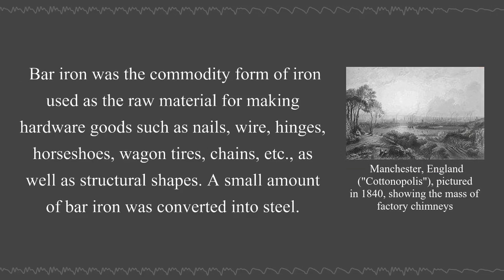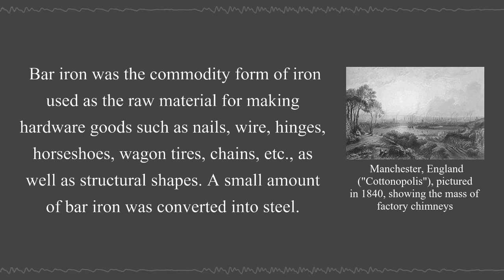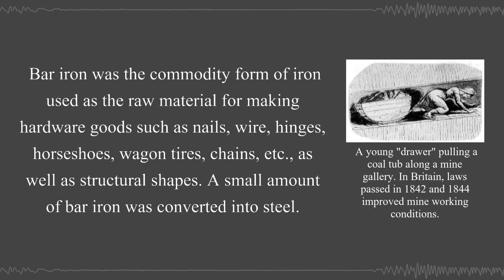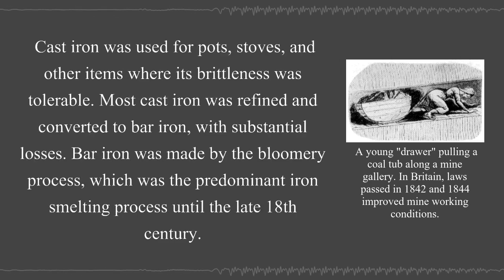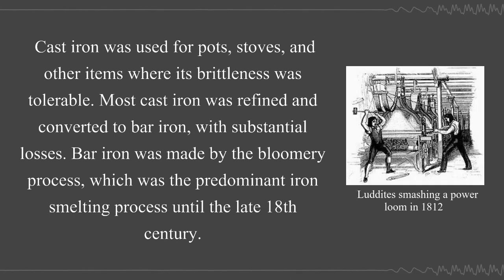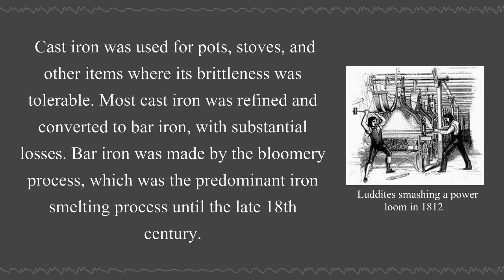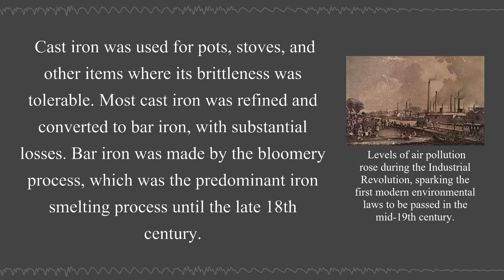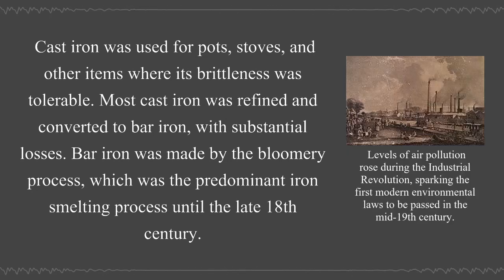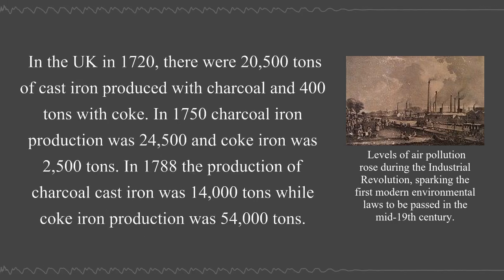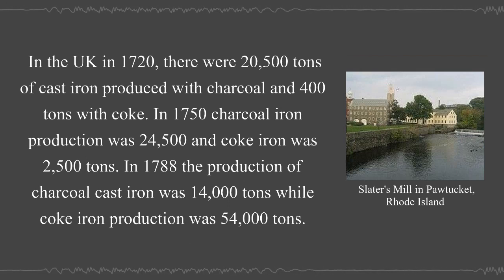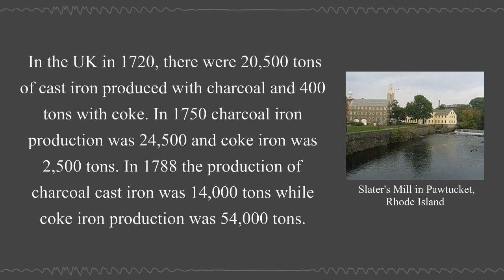Bar iron was the commodity form of iron used as the raw material for making hardware goods such as nails, wire, hinges, horseshoes, wagon tires, chains, and structural shapes. A small amount of bar iron was converted into steel. Cast iron was used for pots, stoves and other items where its brittleness was tolerable, and most cast iron was refined and converted to bar iron, with substantial losses. Bar iron was made by the bloomery process, which was the predominant iron smelting process until the late 18th century. In the UK in 1720, there were 20,500 tons of cast iron produced with charcoal and 400 tons with coke. In 1750, charcoal iron production was 24,500 tons and coke iron was 2,500 tons.